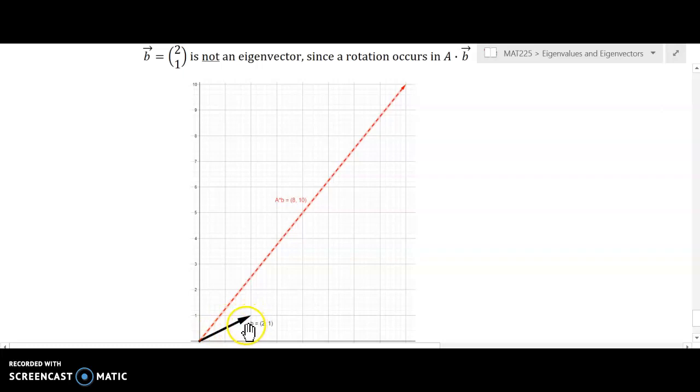Now if I insert some other arbitrary vector like [2, 1], and I multiply A times [2, 1], I actually get the vector [8, 10], which you can see.